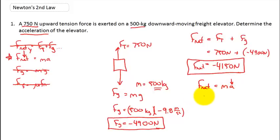Remember, this is what we're keying in on here. We want to find out what the acceleration of the object is. So now we know this is a downward moving elevator. We have a net force that is negative. We're going to see an acceleration, therefore, that is negative as well. So let's plug these numbers in.